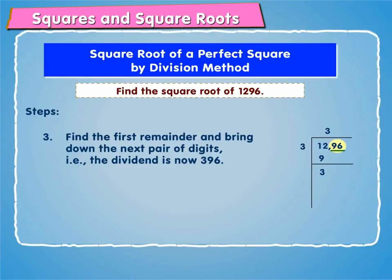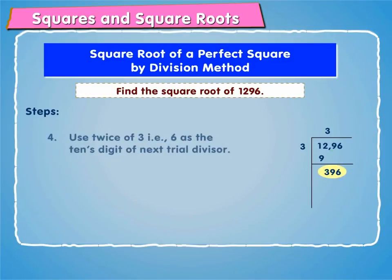Step 3: Find the first remainder and bring down the next pair of digits, i.e., the dividend is now 396.